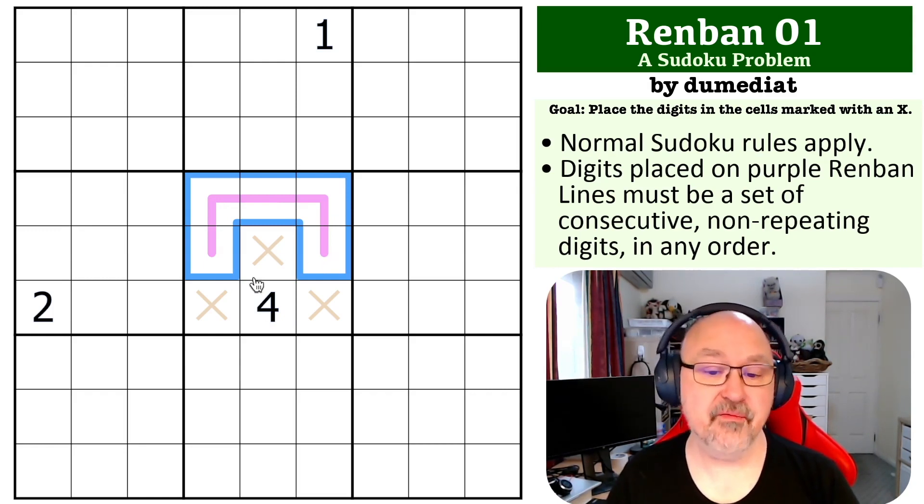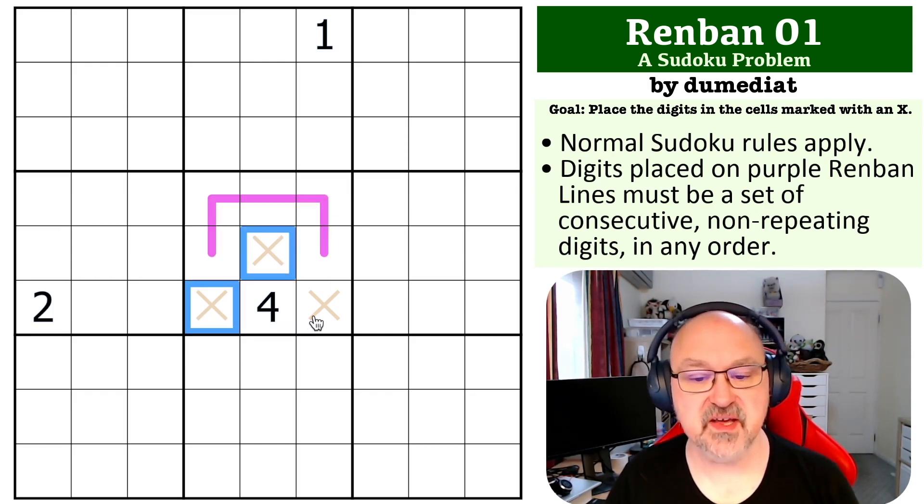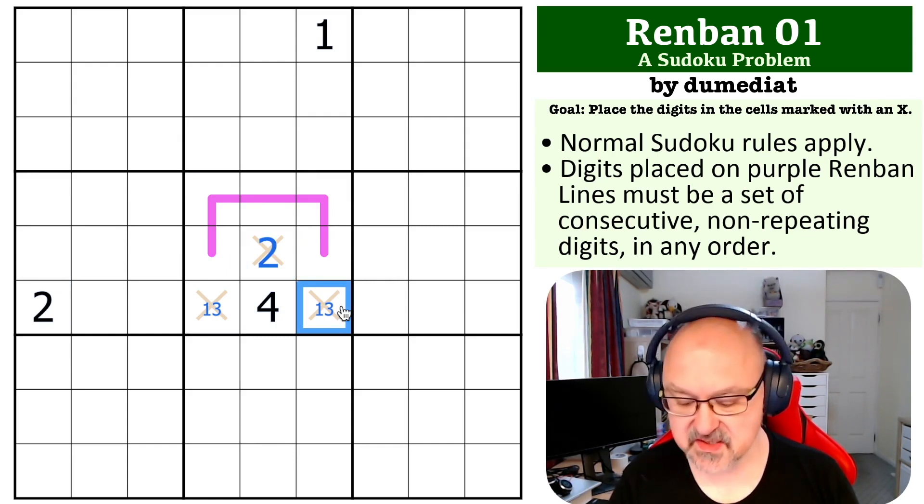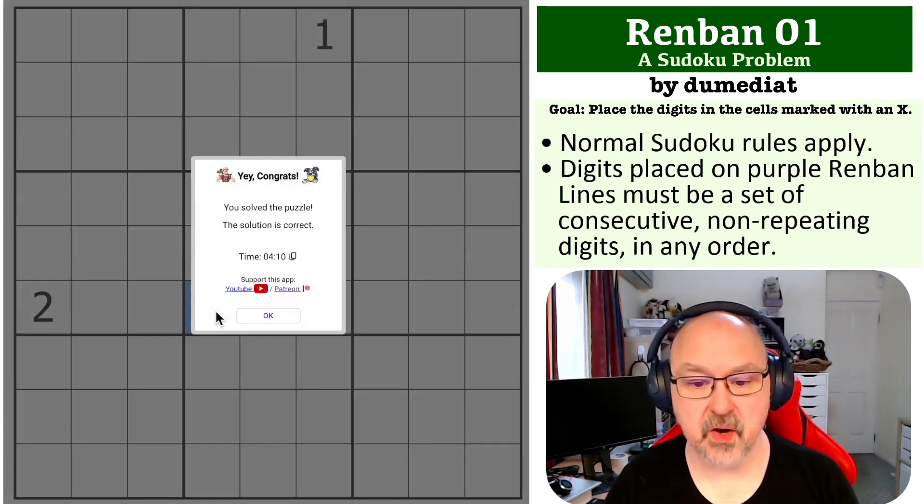What we don't have on this line now is one, two, three, and four. And the four is placed, so these are one, two, and three. Now we can center pencil mark those, but this two immediately eliminates two from those. So this becomes the two, this one means that this is the three, and this is the one.